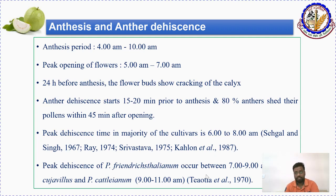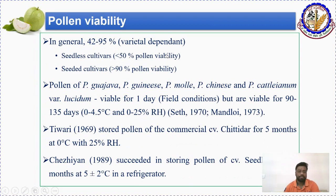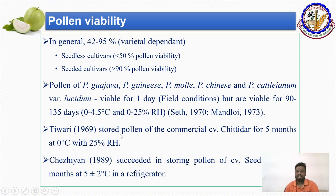The proper stage for emasculation is just before 24 hours of anthesis when calyx cracking happens. Anther dehiscence starts 15 to 20 minutes prior to anthesis, and 80 to 84 percent anthers dehisce within 45 minutes. Pollen viability ranges from 40 to 95 percent. In seedless cultivars, pollen viability is less than 50 percent, whereas in seeded cultivars, high pollen fertility is observed.